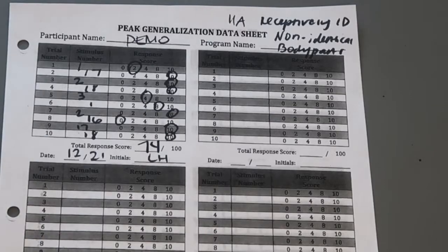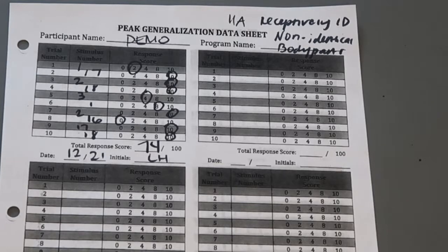Go ahead and check your scores for Peak Generalization 11a: receptively identifying non-identical body parts.